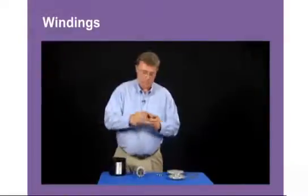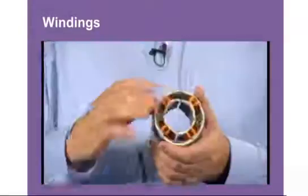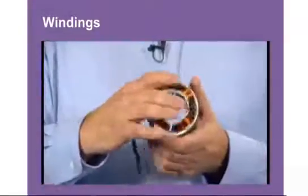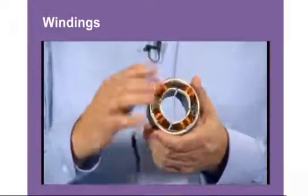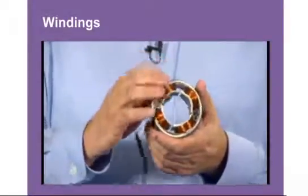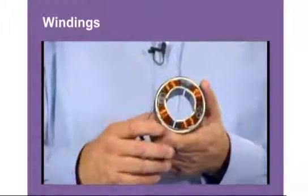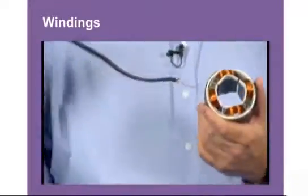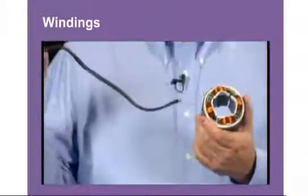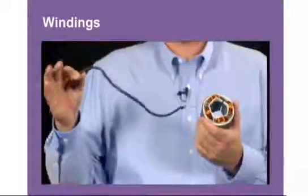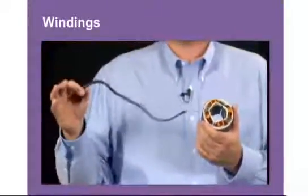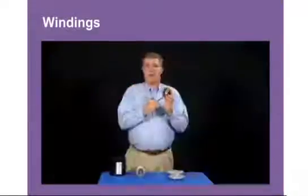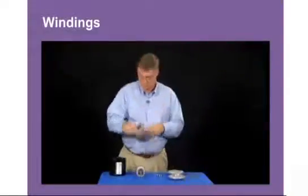We also press the windings, also known sometimes as the poles or the coil, through the stator. We attach leads to that to allow power to get to those windings and energize the motor.